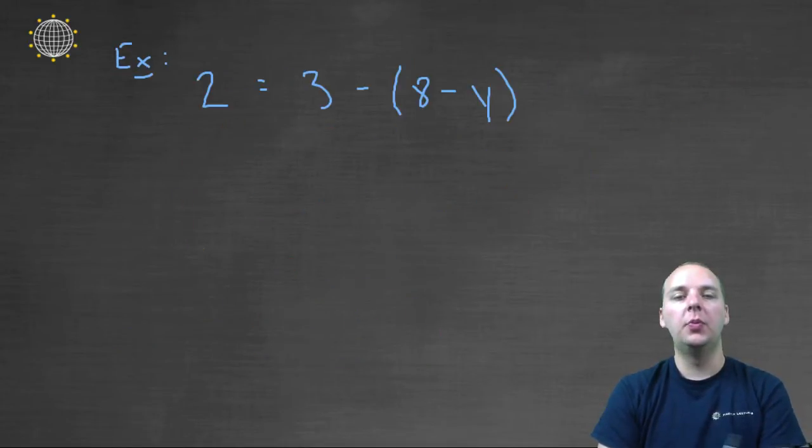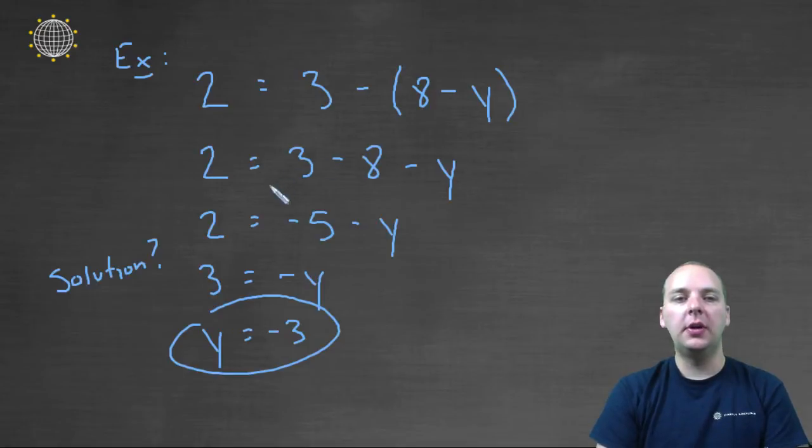Let's do one more: 2 equals 3 minus the quantity (x-y). So I do a little algebra and I get down here to a solution of y equals negative 3. I'm not really sure if that's right, because I had some distributing and some like terms and some other stuff.